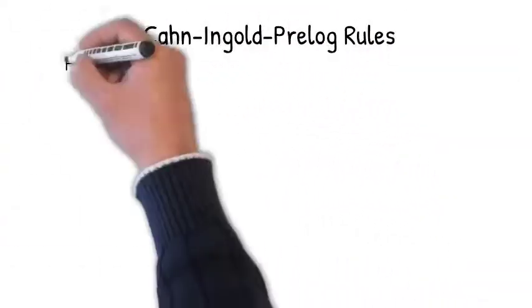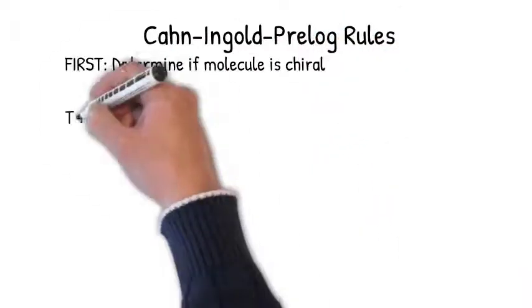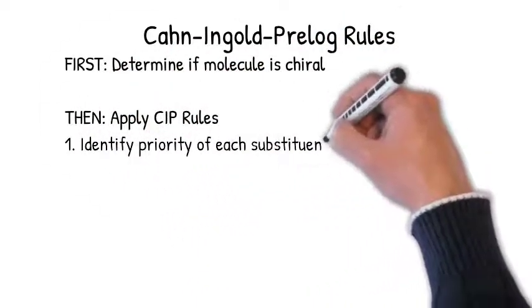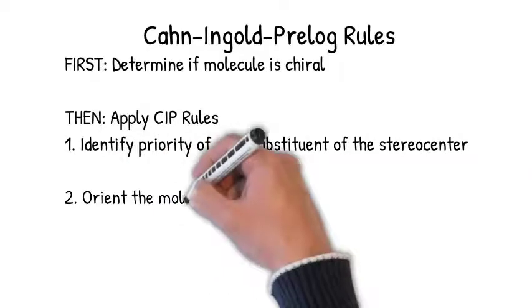But first, how do you determine configuration? We follow a set of rules called the Cahn-Ingold-Prelog rules to do this, or the CIP rules.